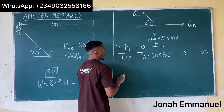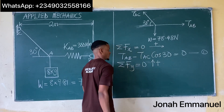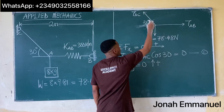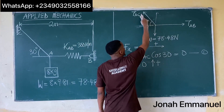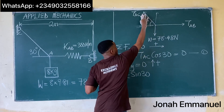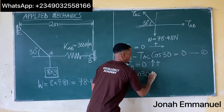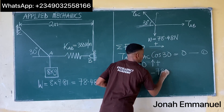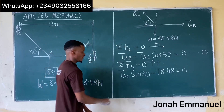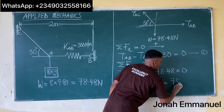Next, resolving vertical forces, summation of Fy = 0. TAC resolved vertically becomes TAC sin30, going upwards so it's positive. W is coming downward so it becomes minus 78.48, equal to zero. So TAC sin30 = 78.48.